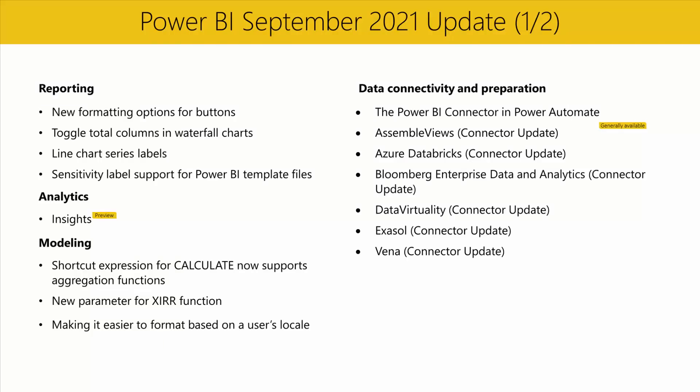In the data connectivity and preparation section, we have several new and updated connectors this month. The Power BI connector in Power Automate is now generally available, allowing users to refresh a dataset, perform exports on Power BI reports, or perform an action when a data-driven alert is fired. We've also made the Assemble Views connector generally available and made updates to the Azure Databricks, Bloomberg Enterprise Data and Analytics, Data Virtuality, Exasol, and Vena connectors. Check out this month's release blog post for more details.